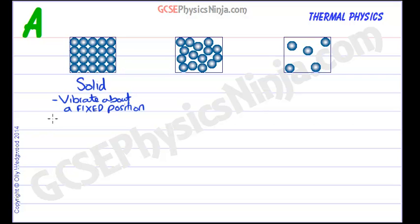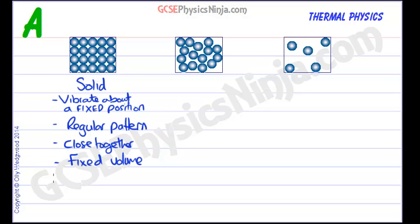They're just vibrating. They have a regular pattern for most materials, most solids, and they are very close together. This means that they have a fixed volume and a fixed shape.